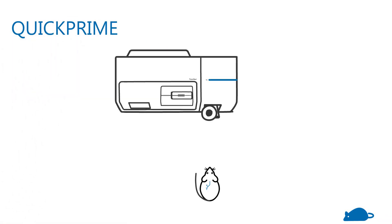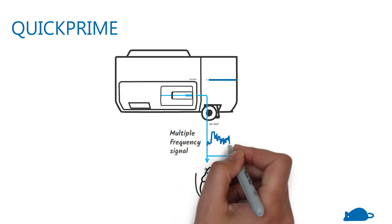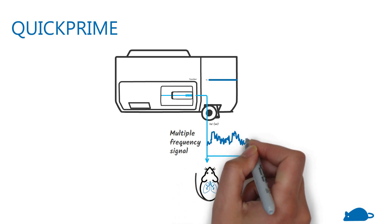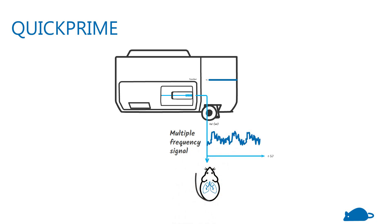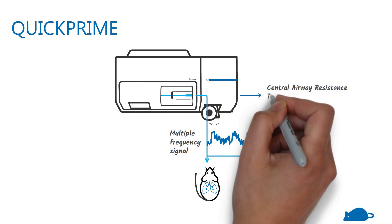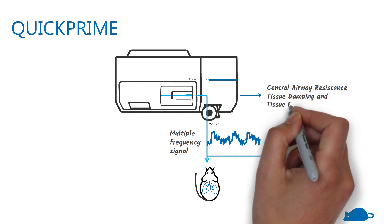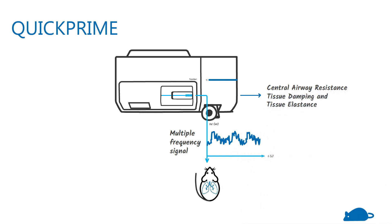In the quick prime measurement, the lungs are given a multiple frequency signal above and below the subject's respiratory rate. The flexi-vent can then separate the contributions from the central airways and peripheral lung tissue to give central airway resistance, as well as tissue damping and tissue elastance.